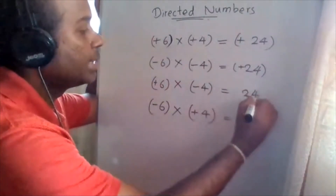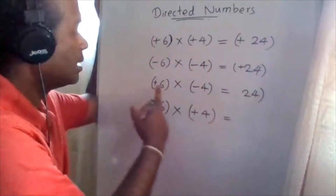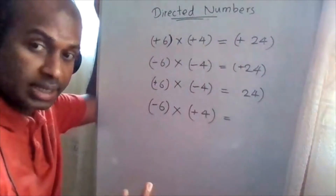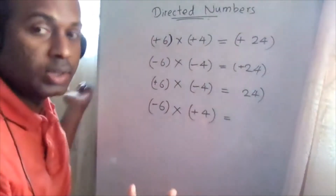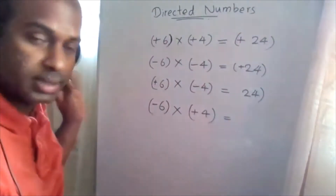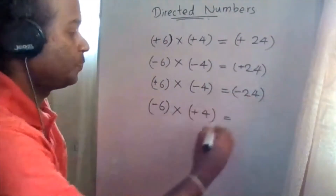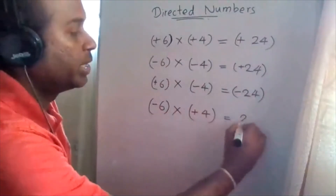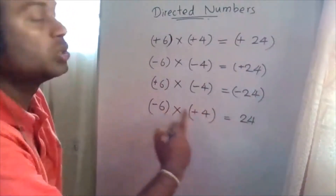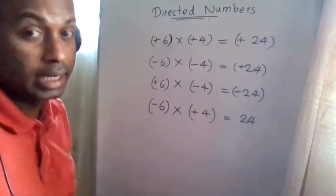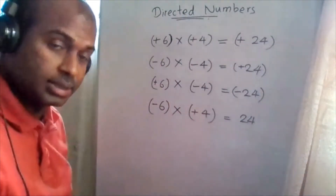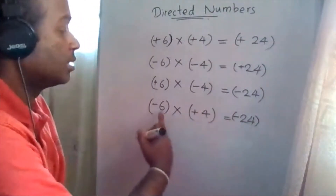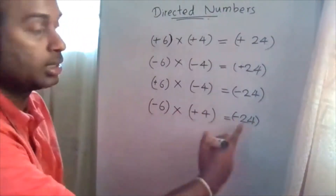Positive six times negative four — they are in different signs, so the answer is negative. Six times four is 24, so the answer is negative 24. Negative six times positive four — again they are in different signs, so the answer is negative 24.